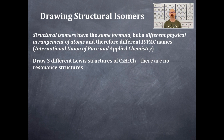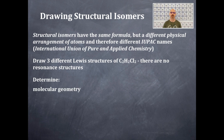We're going to draw three different Lewis structures for C2H2Cl2. There are no resonant structures — these are structural isomers. After we draw the Lewis dot structure of each, we're going to determine the molecular geometry, the hybridization, the bond angles, and the polarity.